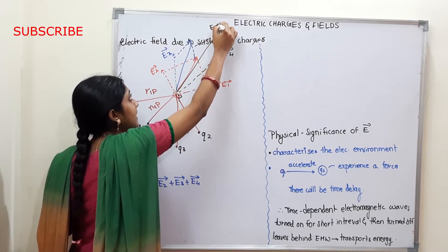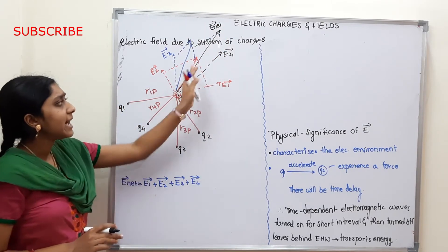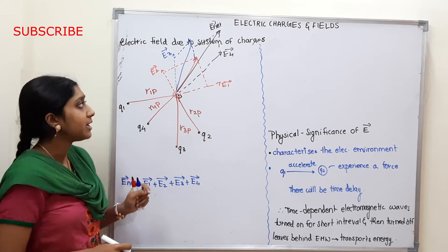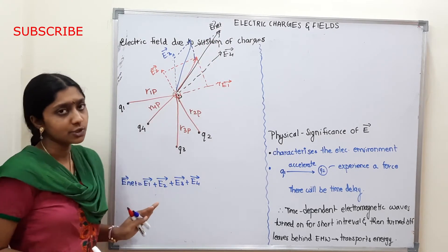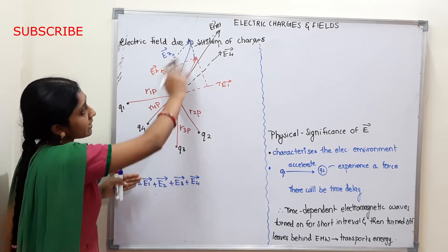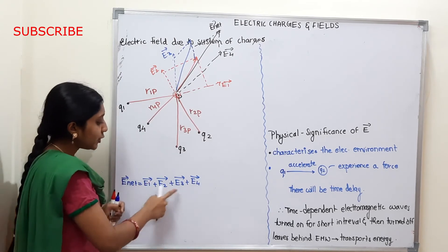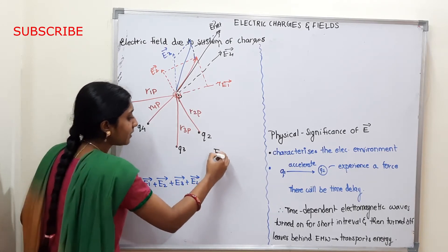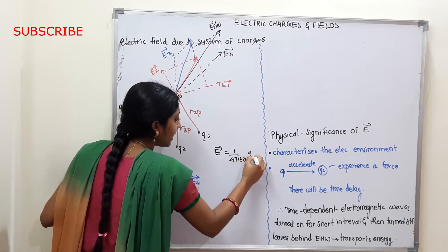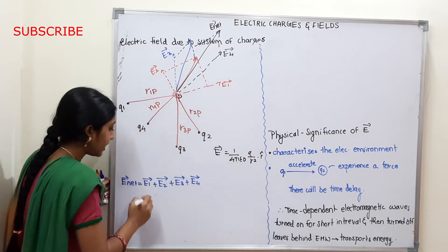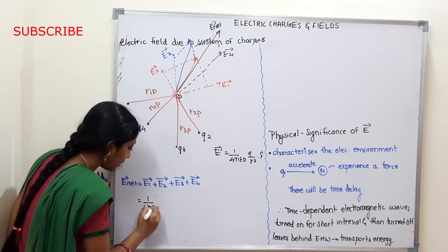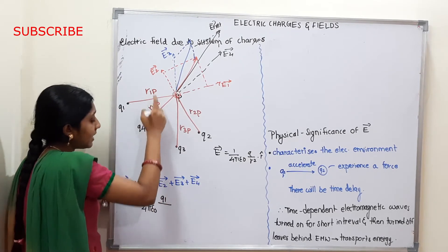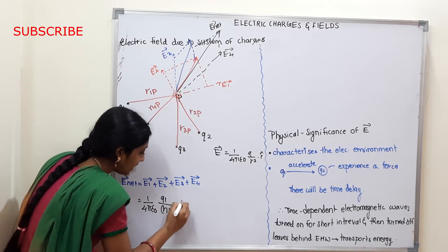So, E-Net is the net electric field. The general formula for the electric field is: E = (1/4πε₀) · (q/r²) · r̂. Applying this to our system, E1 = (1/4πε₀) · (Q1/R1P²) · R1P̂. The distance from Q1 to point P is R1P.